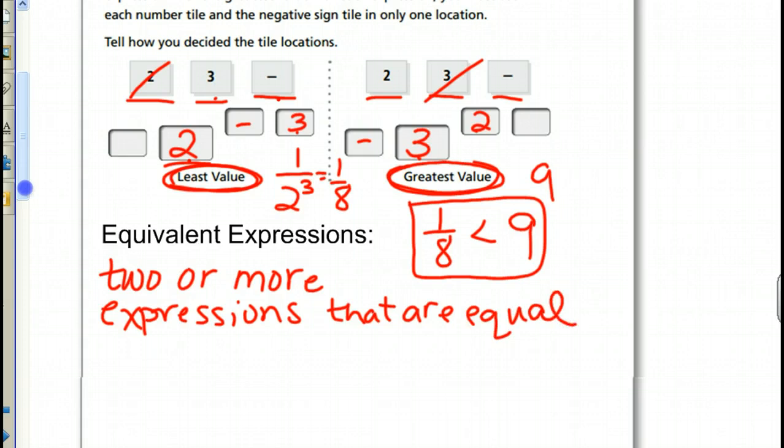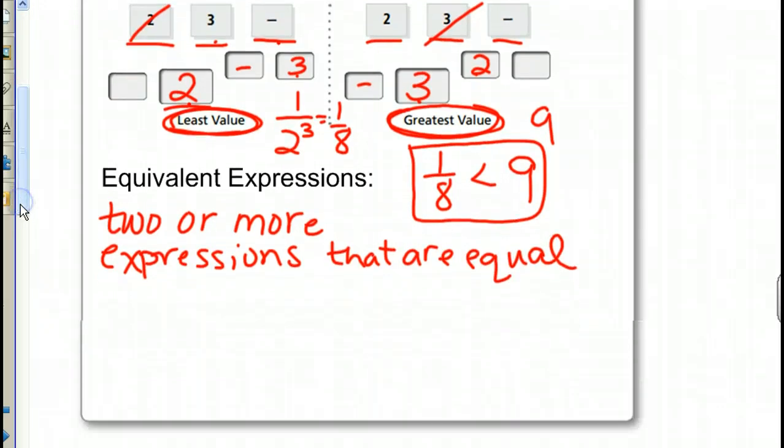So, for example, the number 27. 27 is equal to 3 cubed. It's also equal to 9 times 3 squared. It's also equal to 27 times 1.